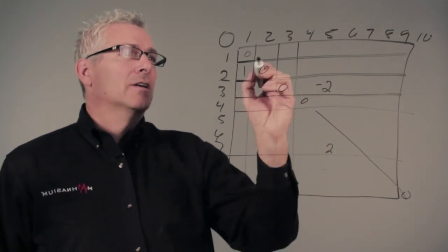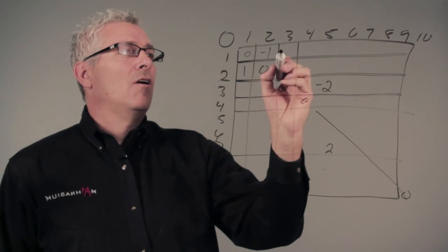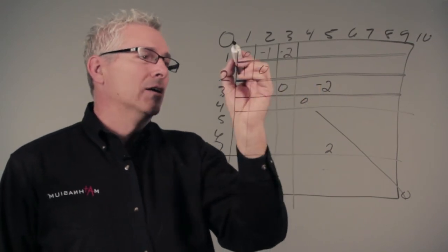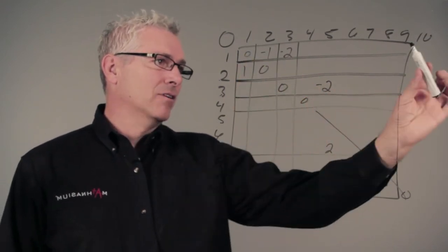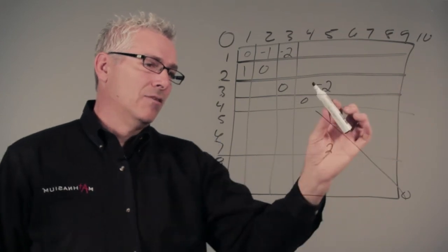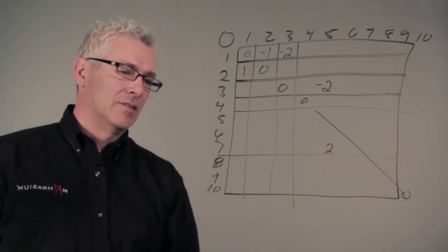So I bet you can now figure out that we're going to have all minuses on this half of the table and we're going to have all pluses on this half of the table.